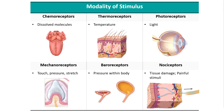Somatic nociceptors detect chemical, heat, or mechanical damage to external body structures or muscles. For example, if you burn yourself, nociceptors send a signal about tissue damage. If you sprain your ankle, nociceptors in the tendons detect that damage. Visceral nociceptors are associated with internal organs and can detect things such as smooth muscle stretched too far, oxygen deprivation in the case of a heart attack, or damage from chemicals released due to internal trauma.